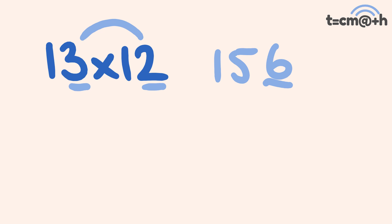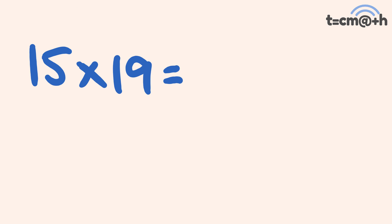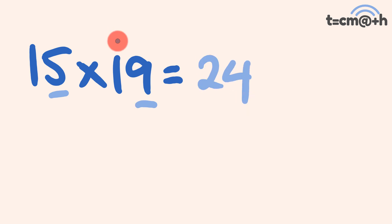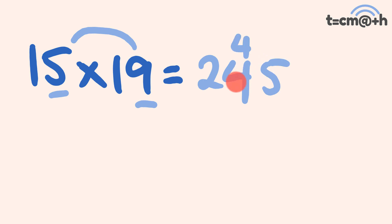What about a harder one? 15 multiplied by 19. The units parts are 5 and 9. 15 plus 9 is equal to 24. Then 5 times 9 is equal to 45. The 5 part goes here, but the 4 is carried across: 4 plus 4 is equal to 8. Our answer is 285. This works for any number in its teens, up to 20.